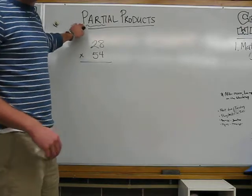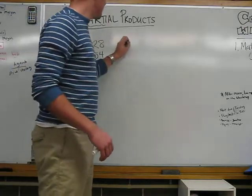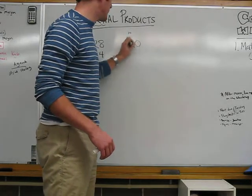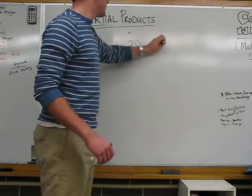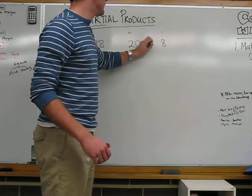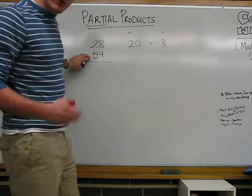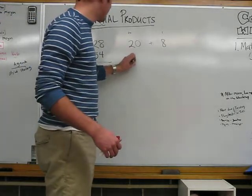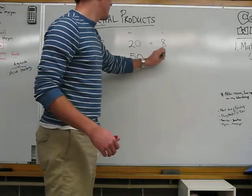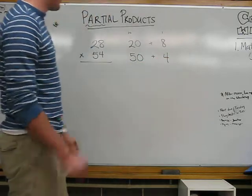28, we're going to break it into parts. The number in the tens place is 20, and the number in the ones place is 8. So, if we do 20 plus 8, that's going to give us 28. 54, we're going to break that into parts. The number in our tens place is 50, and our number in the ones place is 4.